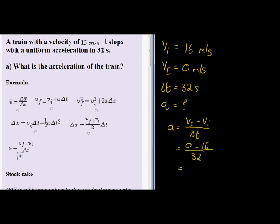That, if we solve it, we get zero minus 16 is negative 16 over 32. And that I can do in my head is negative 0.5 meters per second squared.